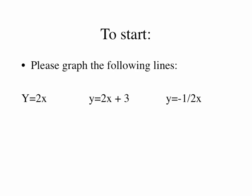At the beginning of this section of notes, please graph the following three lines. The first line is y equals 2x — that is an example of direct variation. The next is y equals 2x plus 3, and the last is y equals negative 1 half x. Please graph all three of these on the same coordinate axis, and label each line with its equation.